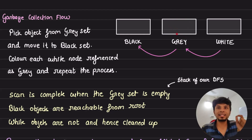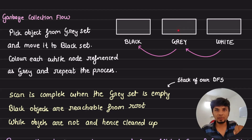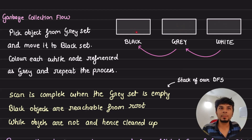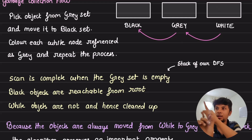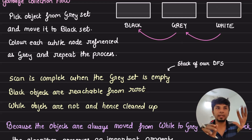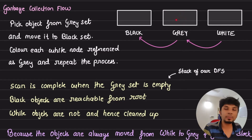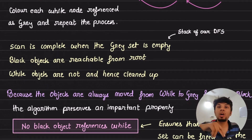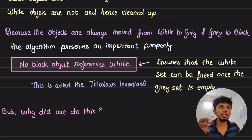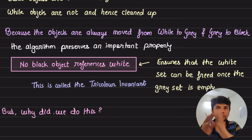Our garbage collection flow: we pick objects from the gray set — nodes we've just seen but not processed — find all their children, and move those children from the white set to the gray set. Once a gray node completes its children iteration, it moves to the black set. We repeat this entire process until every node from the gray set is processed. Once the gray set is empty, whatever remains in white is garbage because it was not reachable from the root.